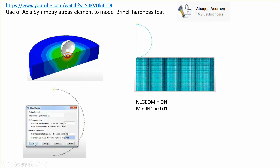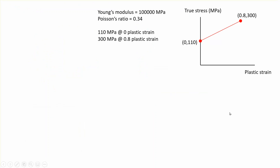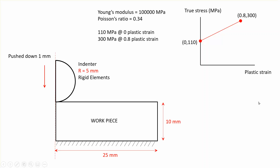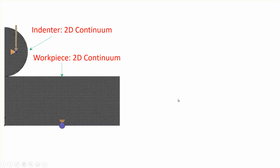The nonlinear geometric effect is on, and I will use the same minimum increment that the reference uses. The material for the workpiece is assumed to be elastic-plastic with specific data, and the dimensions are given. The indenter is pushed down by one millimeter. There is a major difference between the previous two approaches and the current one, which I will discuss shortly.